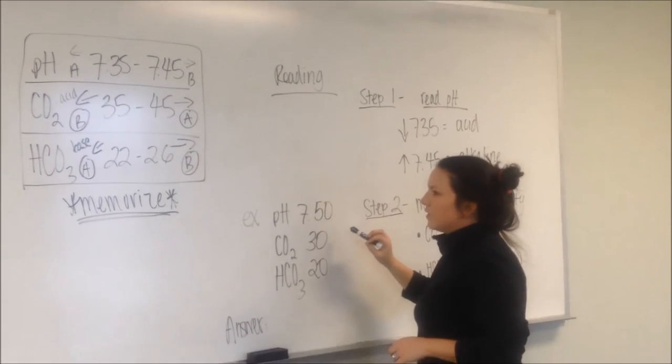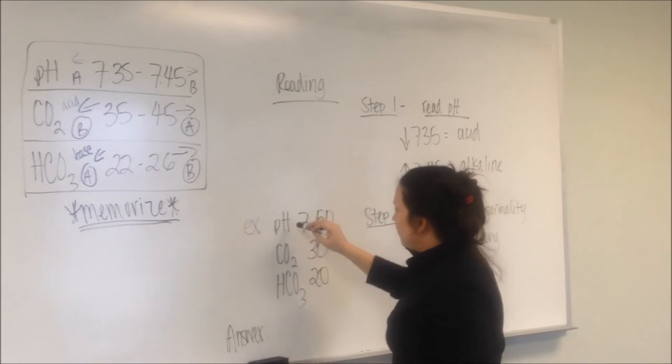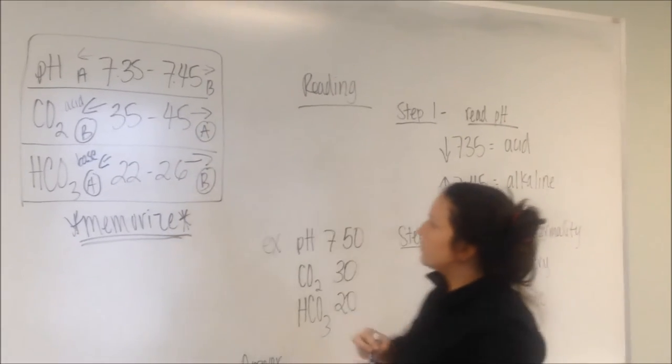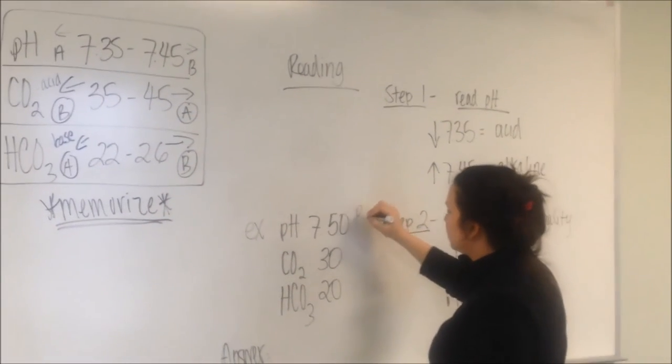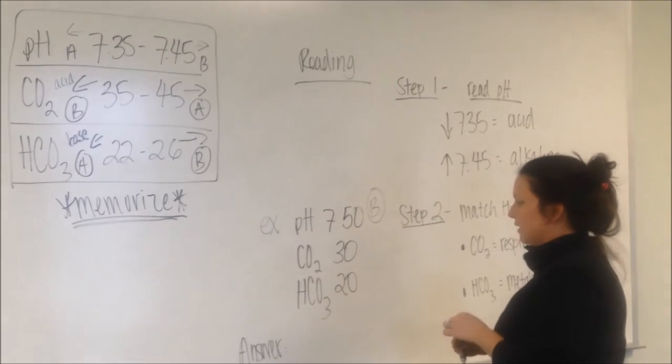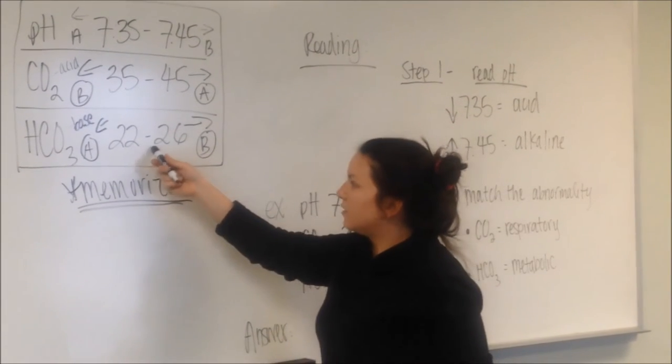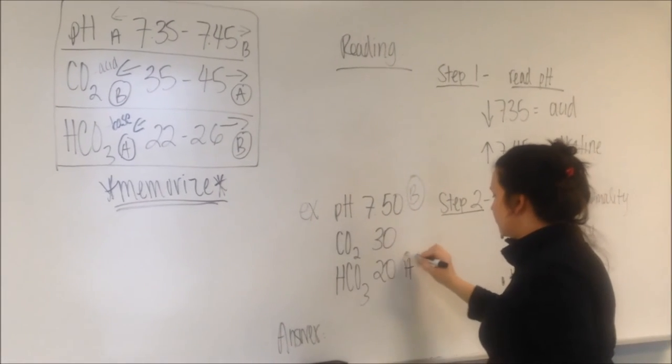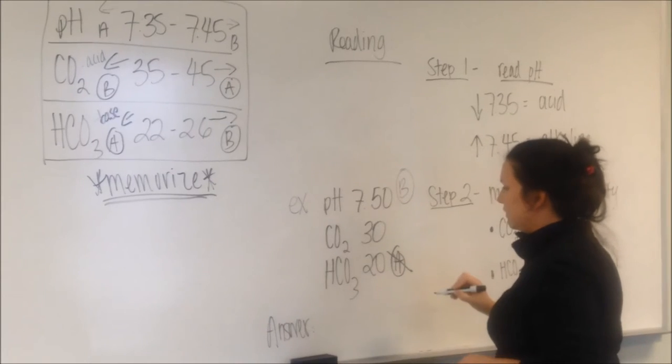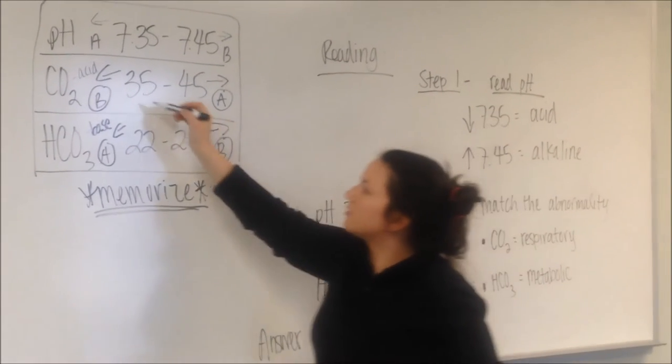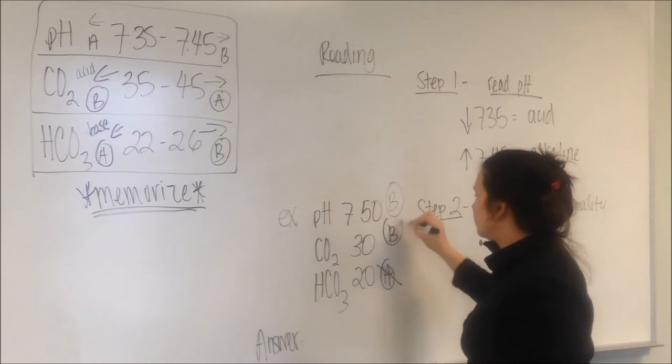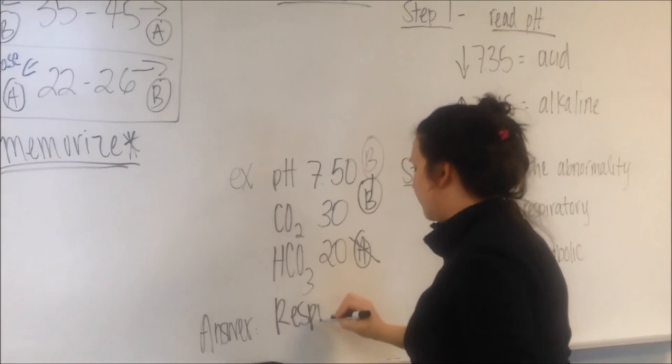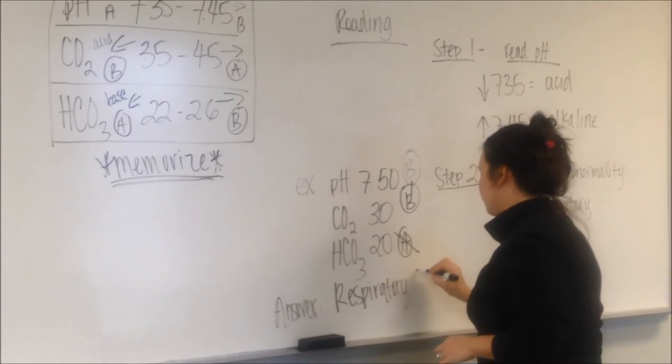Another example of an ABG interpretation is this. pH 7.50, so it's above, so it's a base. Let's work the bottom up again. HCO3 is 20. It's not normal, but it's an acid, so it does not match the key. CO2 is 30, which is a base. It matches. So therefore, our answer is going to be respiratory again. But it's respiratory alkalosis.